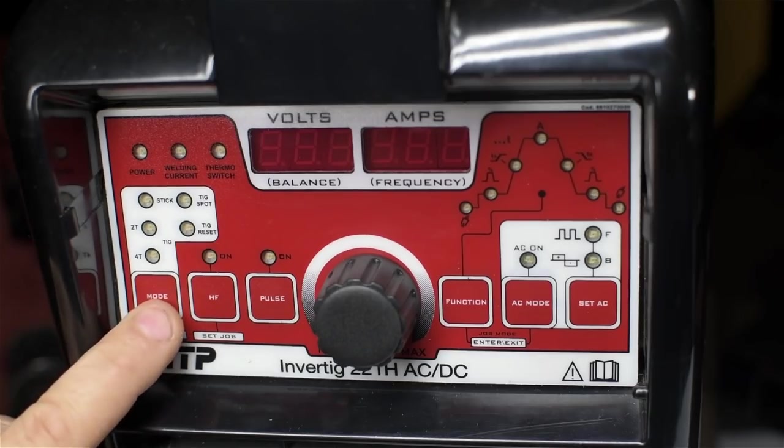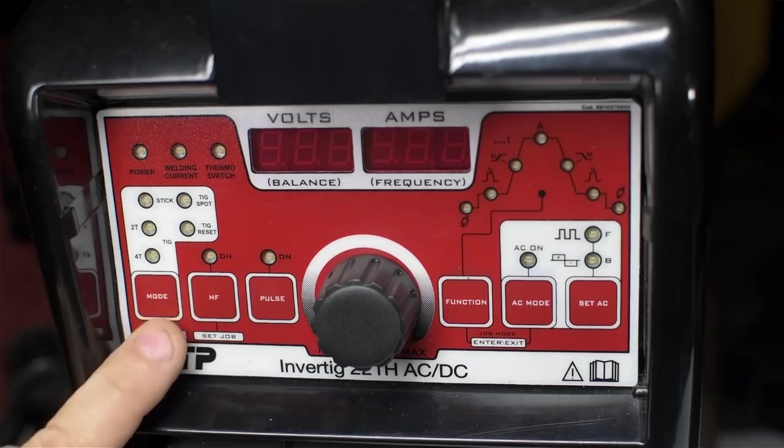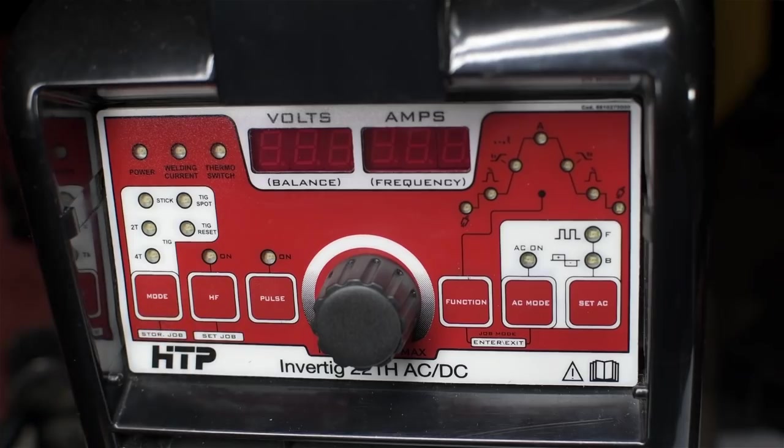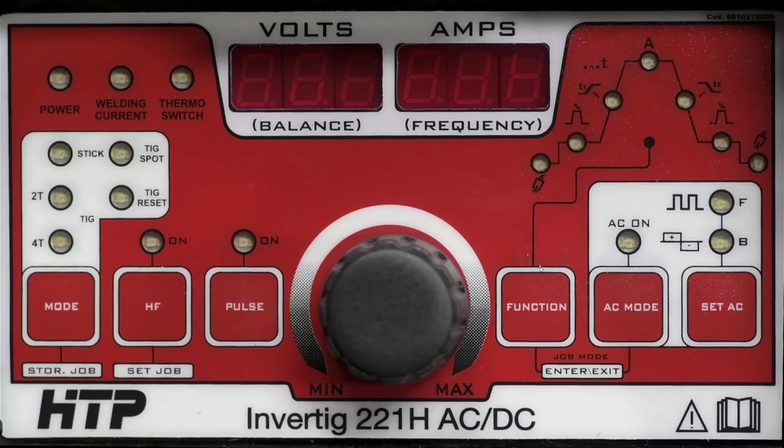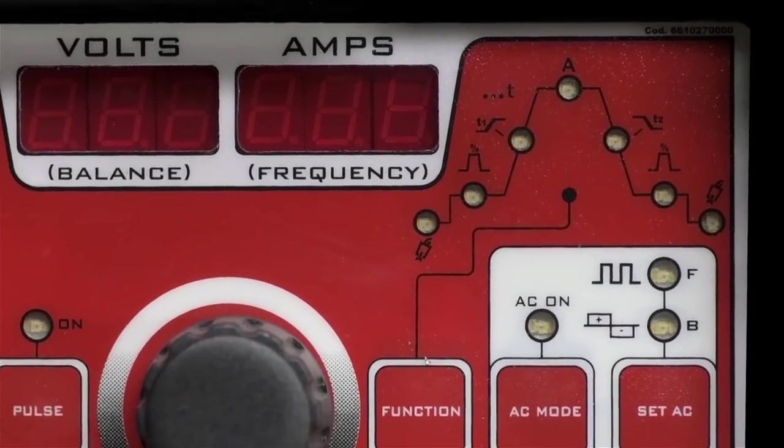If you ever laid awake at night wondering what 2T and 4T meant on your TIG welders, well hold on to your hats, because we're about to get into it. 2T is what you might usually run for a torch switch. 2T is what you use with a foot controller. Actually, you can't even use a foot controller in 4T. But to understand the difference between 2T and 4T, let's have a look at this little graph here on the front panel.